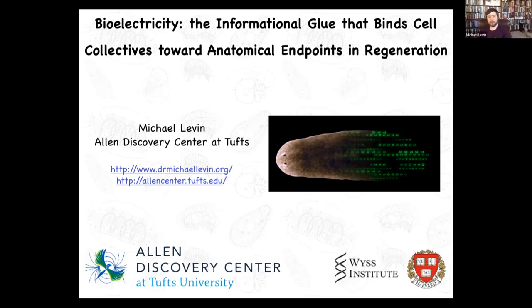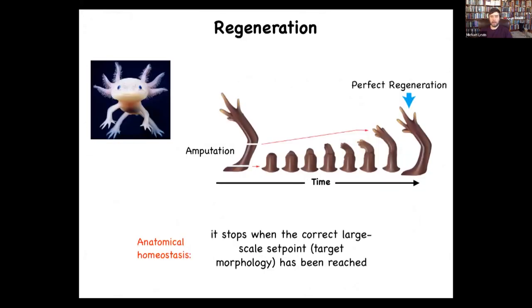Thank you so much, and thank you for the opportunity to share some thoughts at this super interesting meeting. I'd like to talk about regeneration. The most obvious example looks something like this — a Mexican salamander known as an axolotl. They regenerate their limbs, eyes, jaws, ovaries, spinal cord, portions of their heart and brain. The most amazing thing is that if a limb is amputated at different levels, the cells rapidly grow and undergo morphogenesis, recreate the exact same structure, and then stop — when a correct salamander arm has been completed. This raises the obvious question: how do they know what a correct salamander arm is supposed to be? This is an example of what we call anatomical homeostasis — a target morphology the system continuously attempts to reach despite various perturbations.